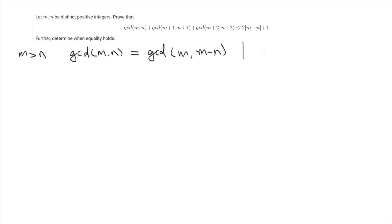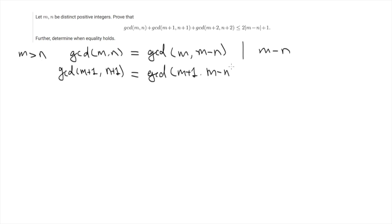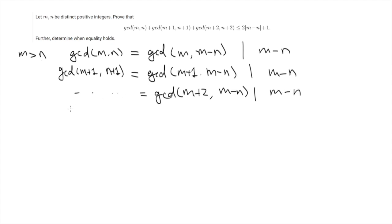In particular, this divides m minus n. Similarly, we can write the other terms in the same way: the GCD between m plus 1 and n plus 1 is equal to the GCD between m plus 1 and n minus n, and in particular this divides m minus n as well, and the same thing for m plus 2.